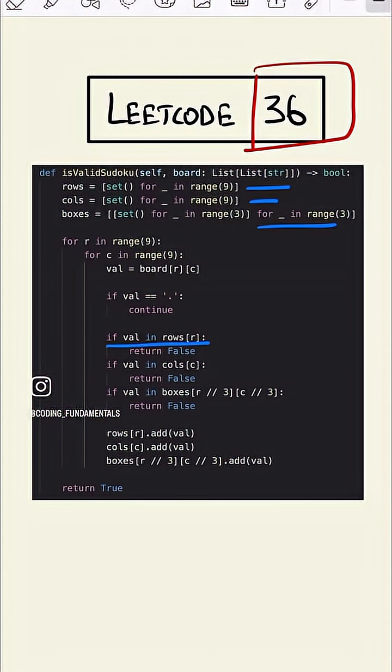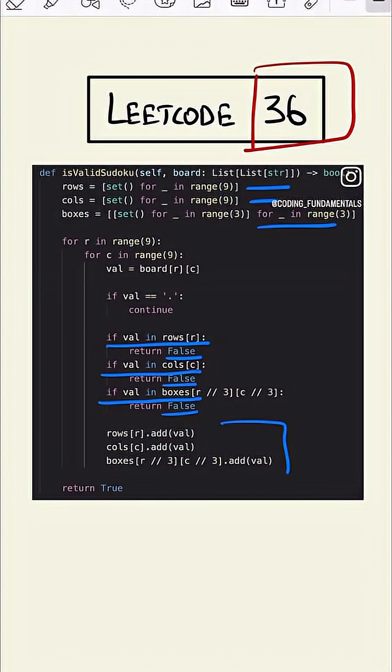If the value is present in that column, then we're returning false. If the value is set in that box, then we are returning false. Else we are adding that value.